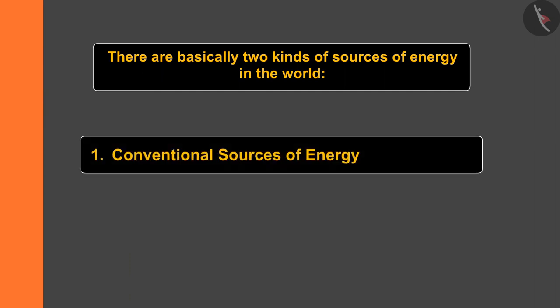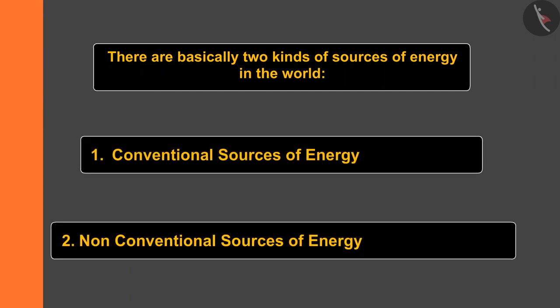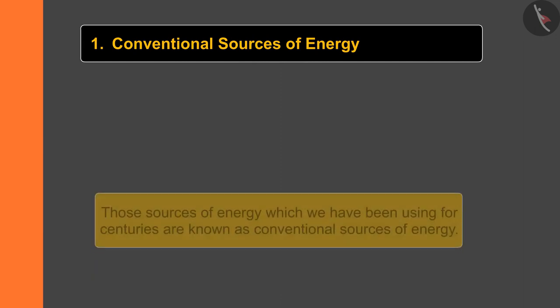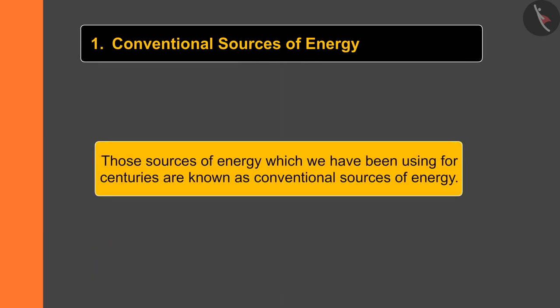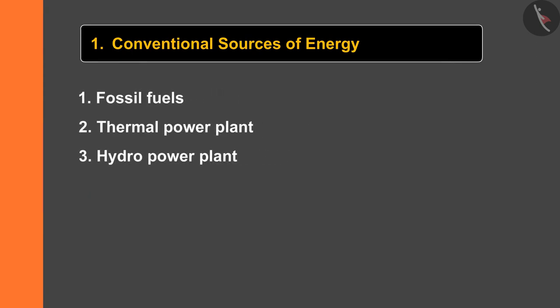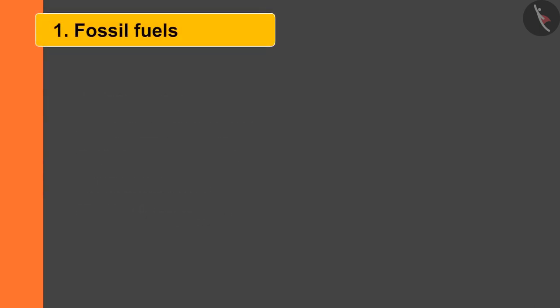There are basically two kinds of sources of energy in the world: conventional sources of energy and non-conventional sources of energy. In today's video, we'll learn about the conventional sources of energy. Those sources of energy which we have been using for centuries are known as conventional sources of energy, such as fossil fuels, thermal power plants, hydropower plants, biomass, and wind energy.